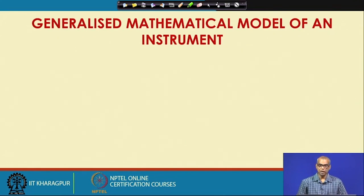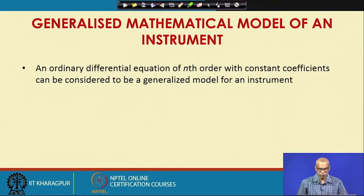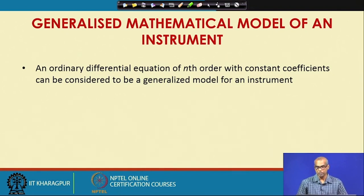Now we will talk about the generalized mathematical model of an instrument. The question we ask is: is it possible to express the working of an instrument — in other words, to relate the input and output of an instrument — by a set of mathematical equations? Usually, a differential equation is used so that you can get output for a given input with respect to time. An ordinary differential equation of nth order with constant coefficients can be considered to be a generalized model of an instrument.